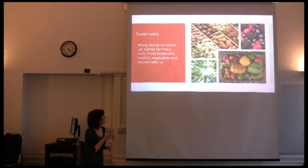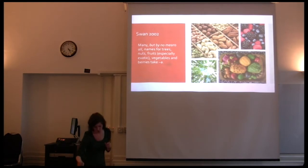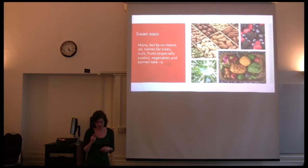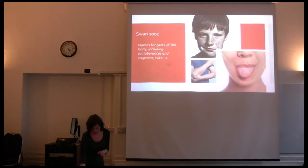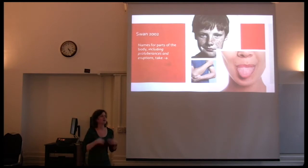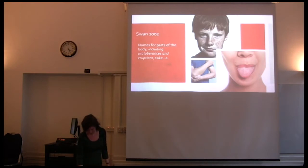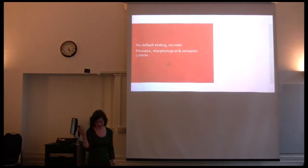To begin: many — but by no means all — names for trees, nuts, fruits (especially exotic fruits), vegetables, and berries take A. Serially produced food items, especially delicacies, tend to take A. Names for parts of the body, including protuberances and eruptions, take A. This goes on for pages and pages. You can imagine how thrilled students are to get this list thrown at them and then be told: well, in most cases you will probably be right.